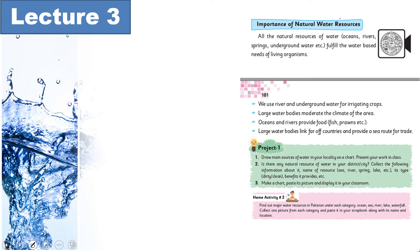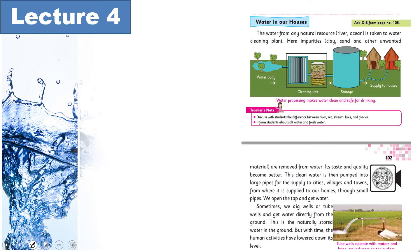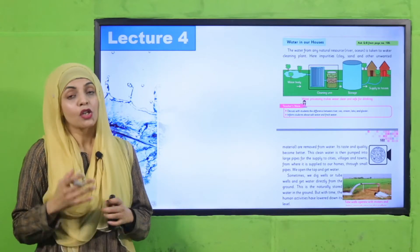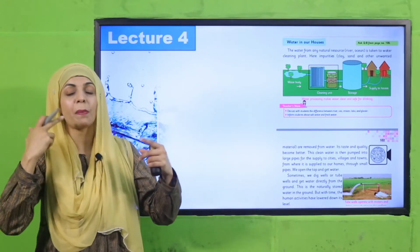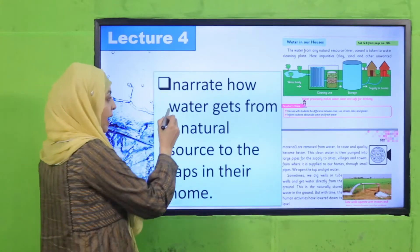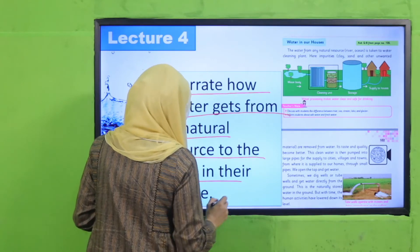Then in Lecture Number 3: Importance of Natural Water Resources — kaun kaun se paani ke resources hain, woh kya hain, unki kya importance hai — this will be discussed, and students will be able to recognize the importance of water resources. Then in Lecture Number 4: Water in Our Homes — paani kahan se aata hai apke gharon mein, tap mein koi jadu toh nahi hota na — so hum paani ka tamam process aur journey discuss karenge. Students will be able to narrate how water gets from a natural source to the taps in their home.